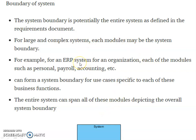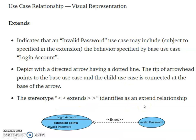For example, enterprise resource plan. For an enterprise resource planning, there should be some personal information and payroll. Then module is having accounting. For these all sub-modules, they are having separate boundary for the system. Then the entire system boundary can span all these modules and depict the overall system boundary.